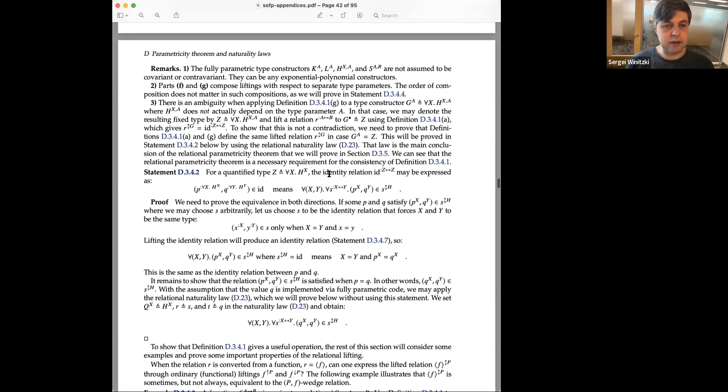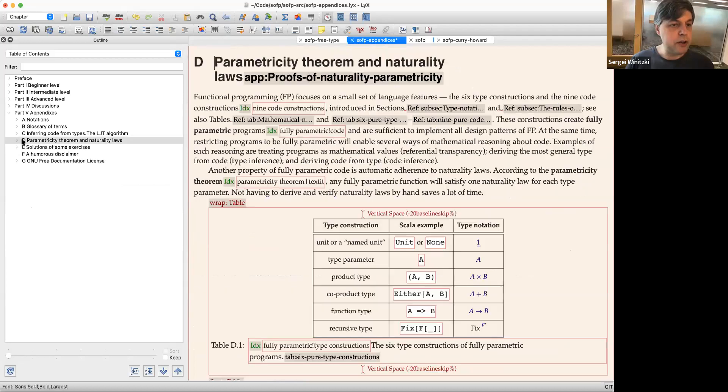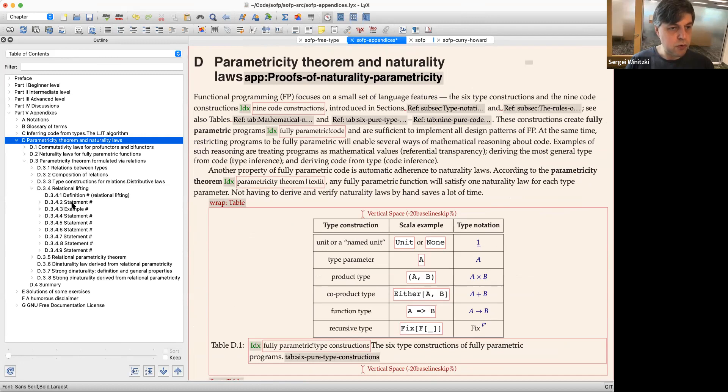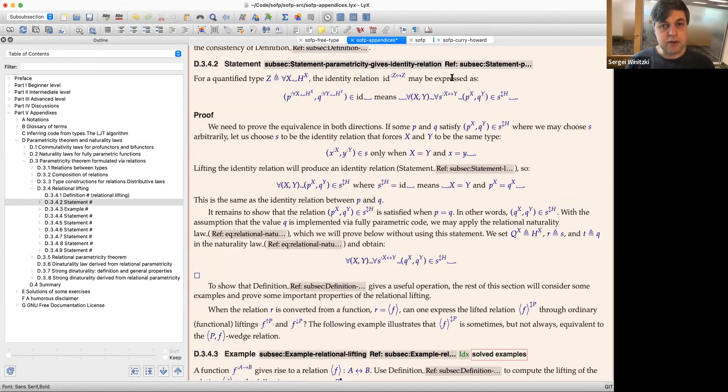So I think about the sentence. Most likely there are some words that I can just delete, like identity relation. I'm saying that this is a relation which is identity. I don't have to repeat that. So let me go to D342 and remove the identity relation.